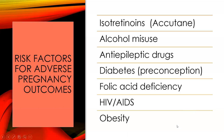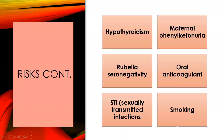Obesity contributes to a lot of our other maternal health conditions. Other risks include hypothyroidism, maternal fetal ketonuria, rubella seronegativity — meaning if they are not immune to rubella — which is German measles, an infection that passes through the placenta and can cause severe birth defects or fetal death. Oral anticoagulants, sexually transmitted diseases, and smoking are also risks.